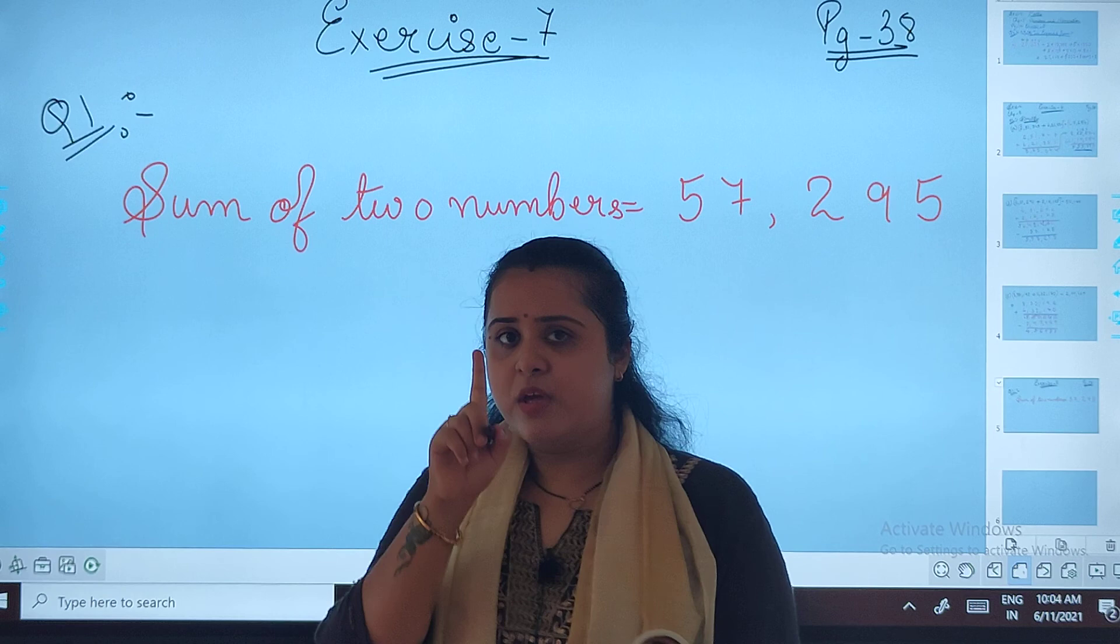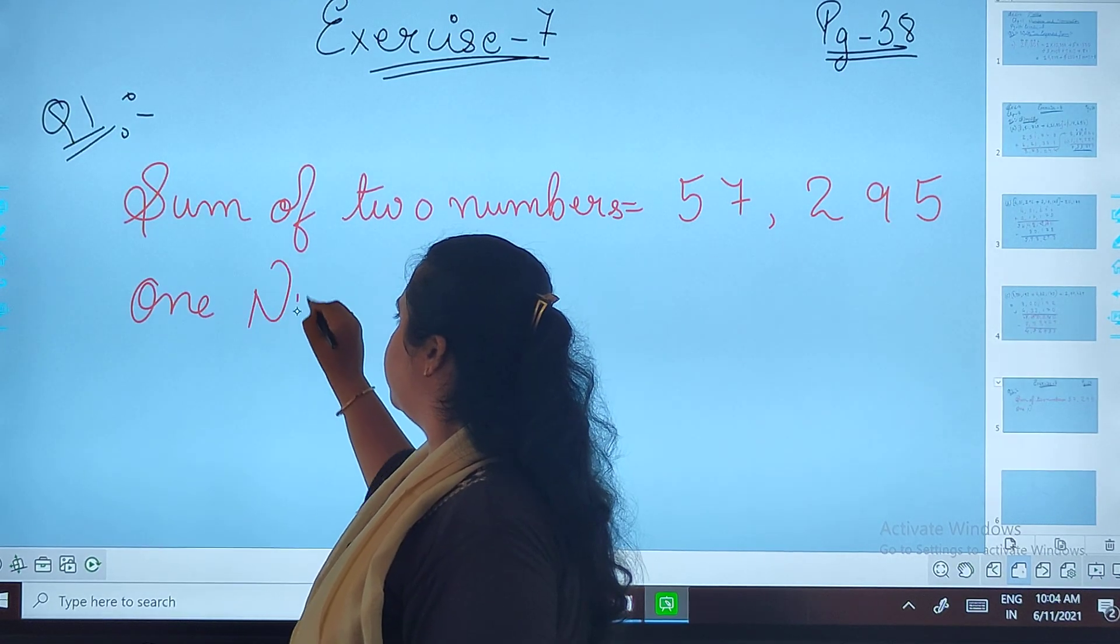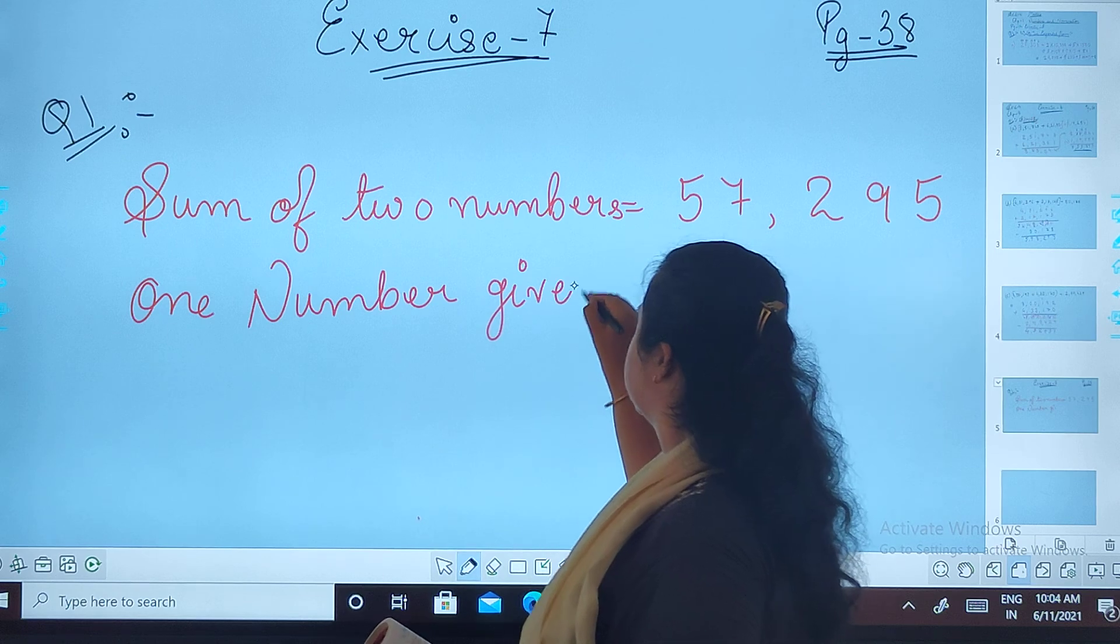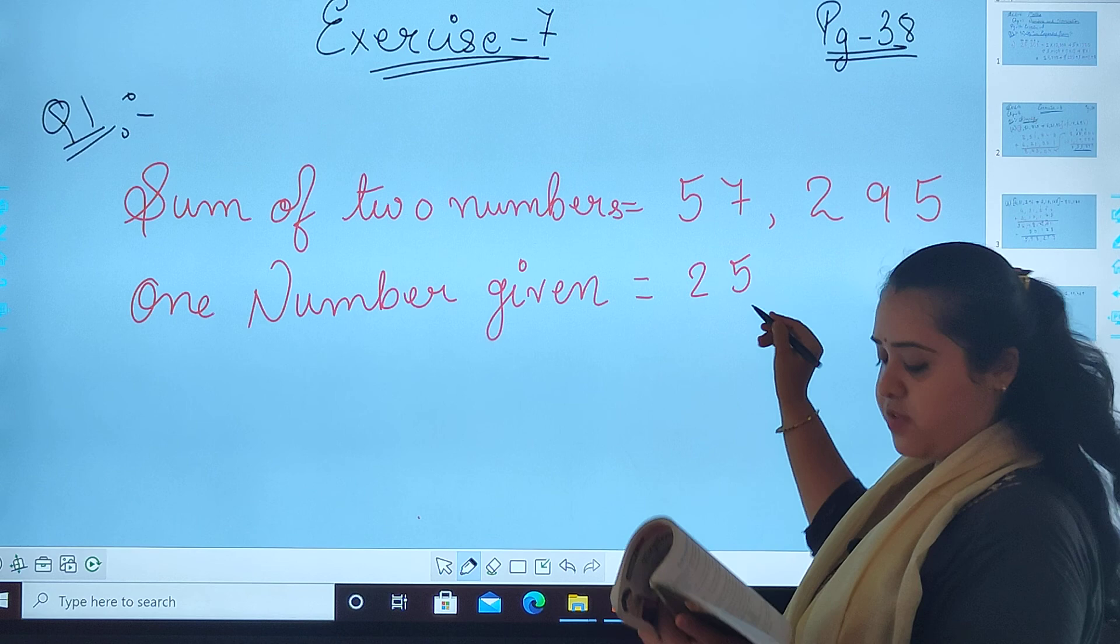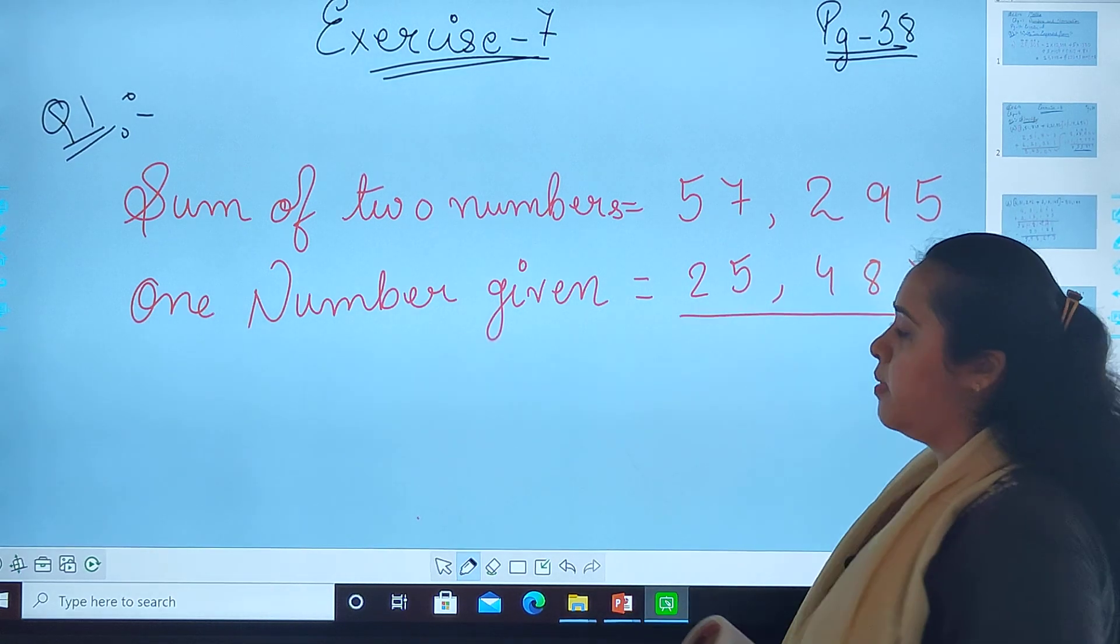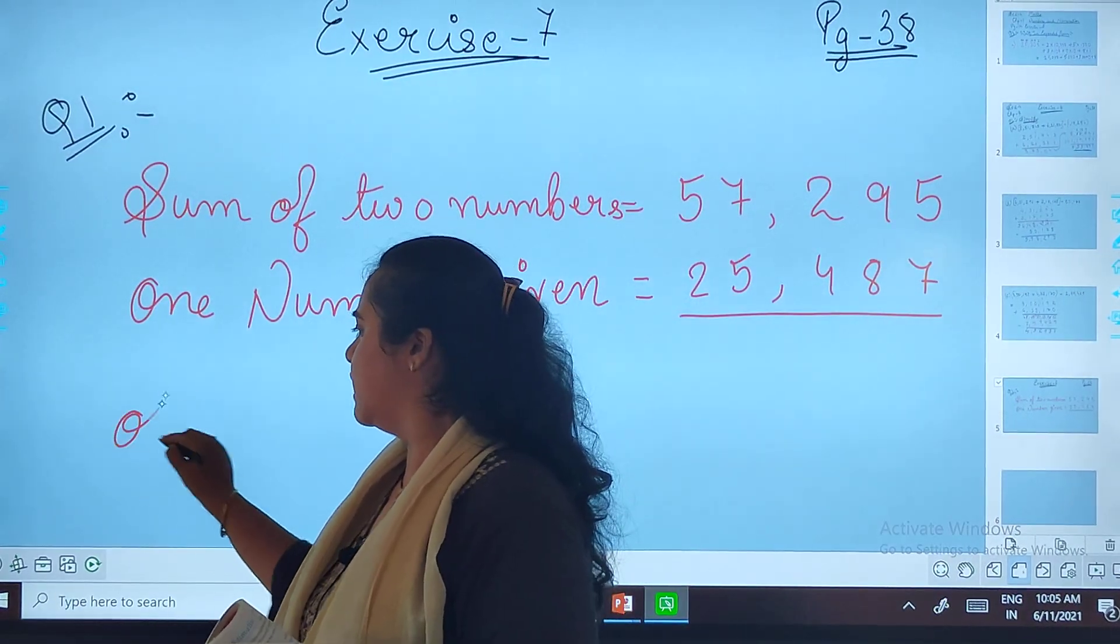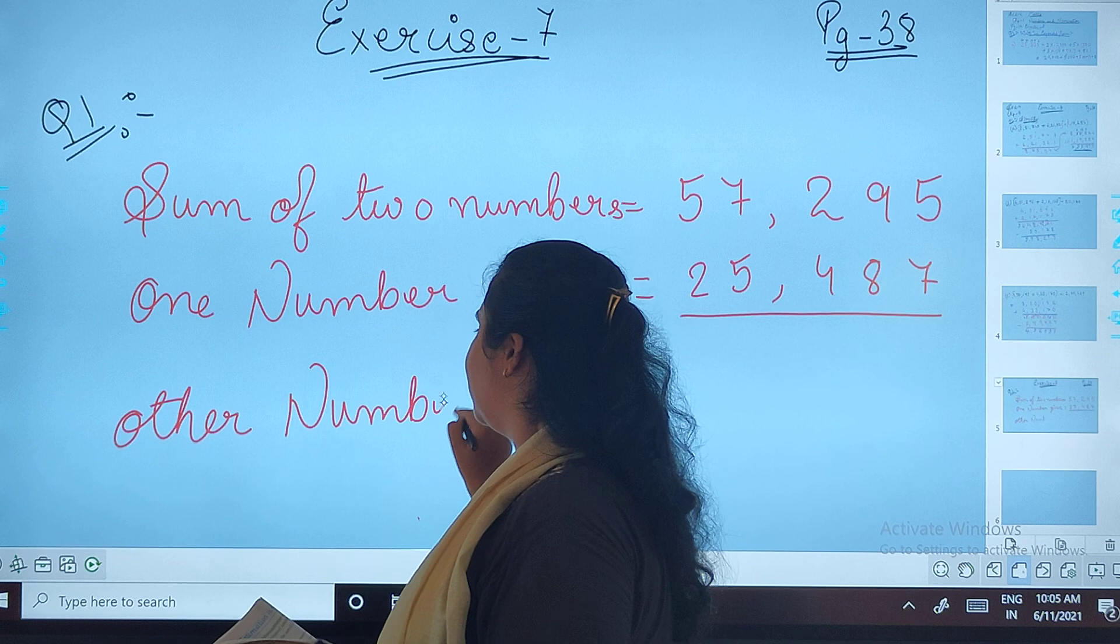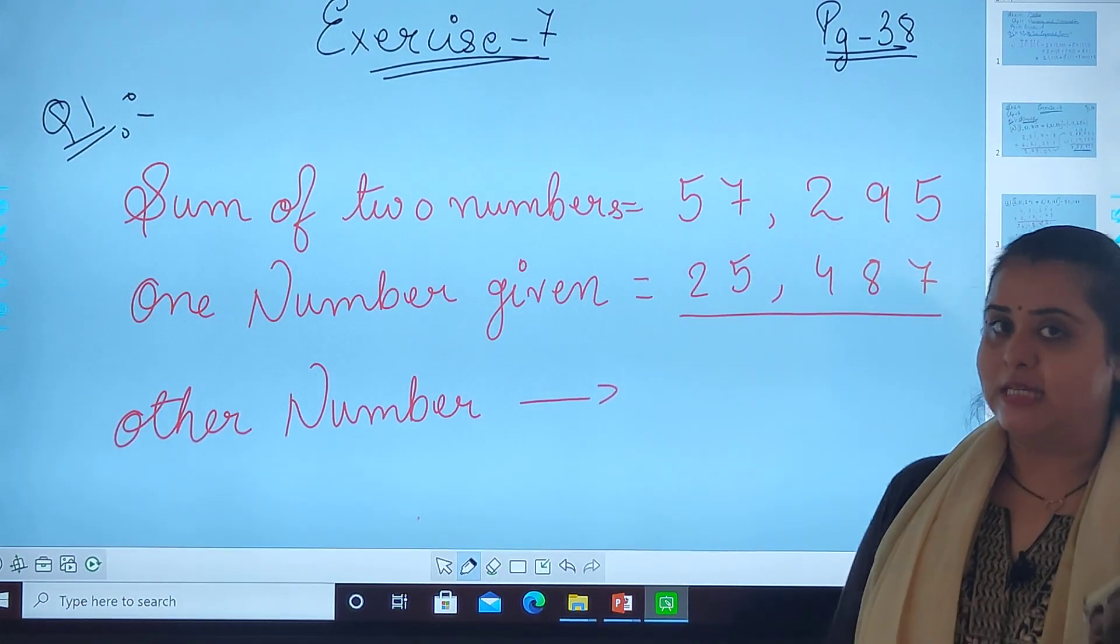Now I have given one number, the first number or the one number given in the question, that is 25,487. To find the second number or the another number or the other number, what you can do? You will be adding it or you will be subtracting it. Exactly, now subtracting it.